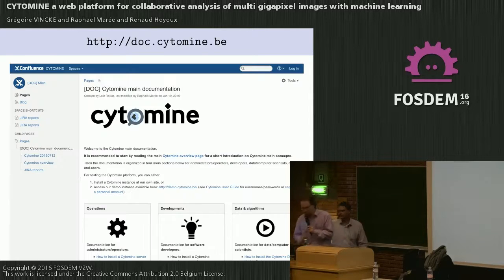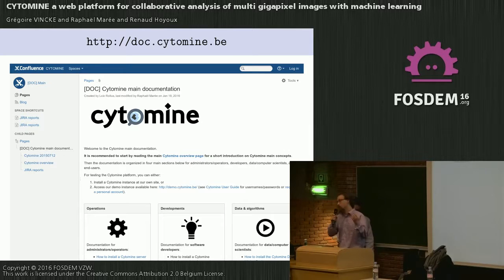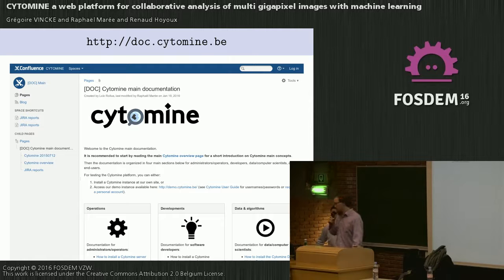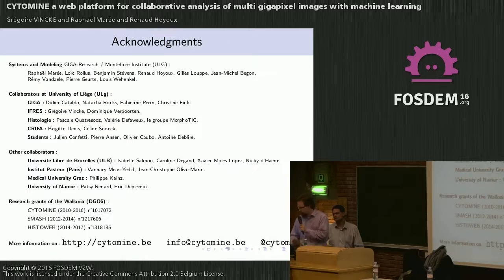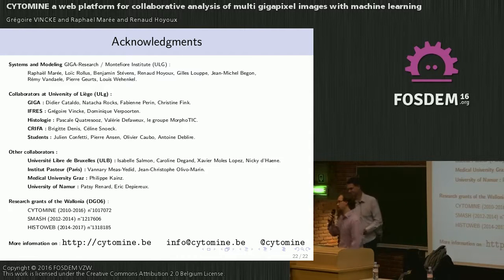If you want to install Cytomine on your servers, you have the documentation. If you want to develop machine learning or data mining jobs and plug them into Cytomine, it's in the documentation at doc.cytomine.be. All the sources are on GitHub with mostly an Apache 2 license. Thanks to Grégoire, thanks to the FOSDEM organizers, and thank you all.